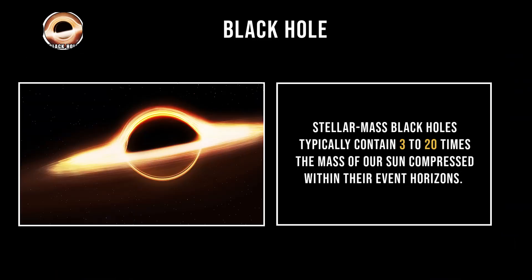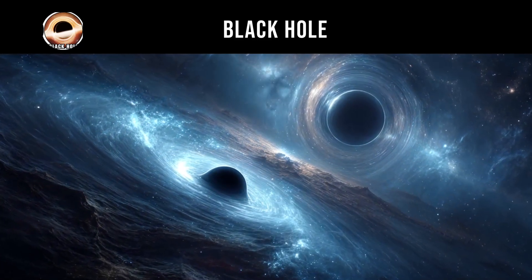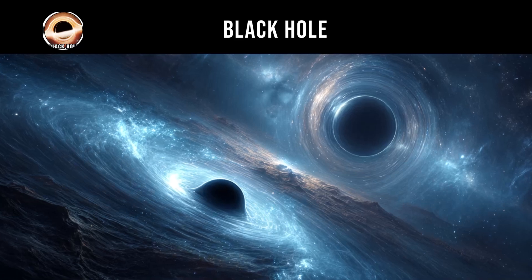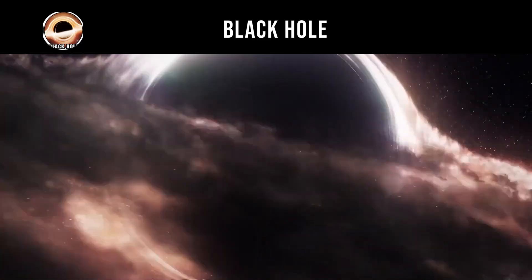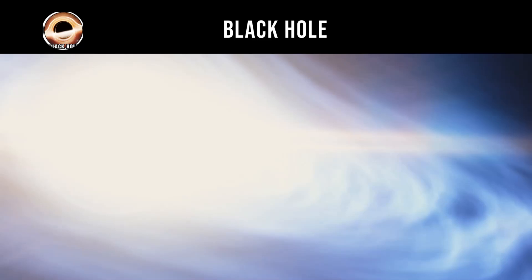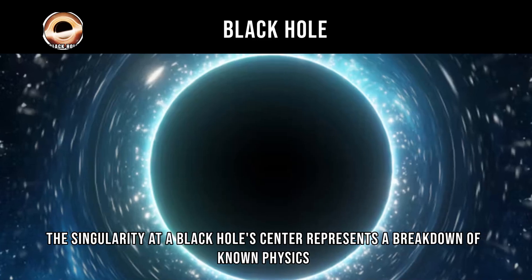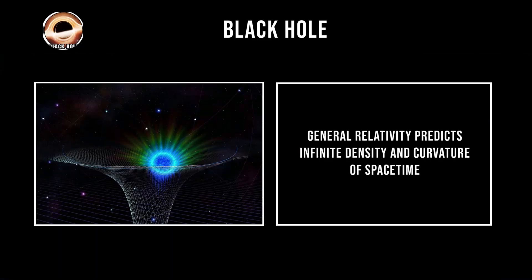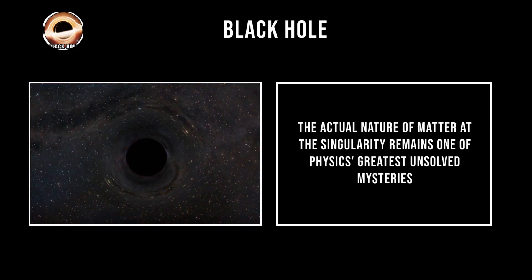Stellar mass black holes typically contain three to twenty times the mass of our sun compressed within their event horizons. These objects warp spacetime so severely that time dilation becomes extreme near the event horizon — an outside observer would see objects falling toward the black hole appear to slow down and freeze at the event horizon, while the falling object would experience normal time passage. The singularity at a black hole's center represents a breakdown of known physics, where general relativity predicts infinite density and curvature of spacetime, but quantum mechanics suggests this description becomes invalid at such extreme scales.